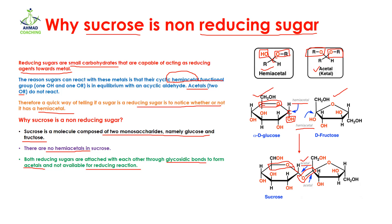But if they have a hemiacetal group — meaning one –OH and one –OR group — it means they are going to be a reducing sugar. That was all about why sucrose is a non-reducing sugar. If you have any question related to this topic, you can ask me in the comment section. I will see you in the next video.